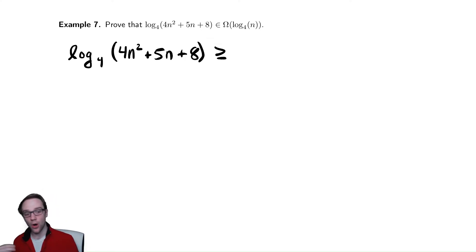Just as we've done in the past, we're gonna drop all but the dominant term. So I'm gonna drop everything but the 4n squared, that's inside of the log. So we're gonna drop everything except for the 4n squared.